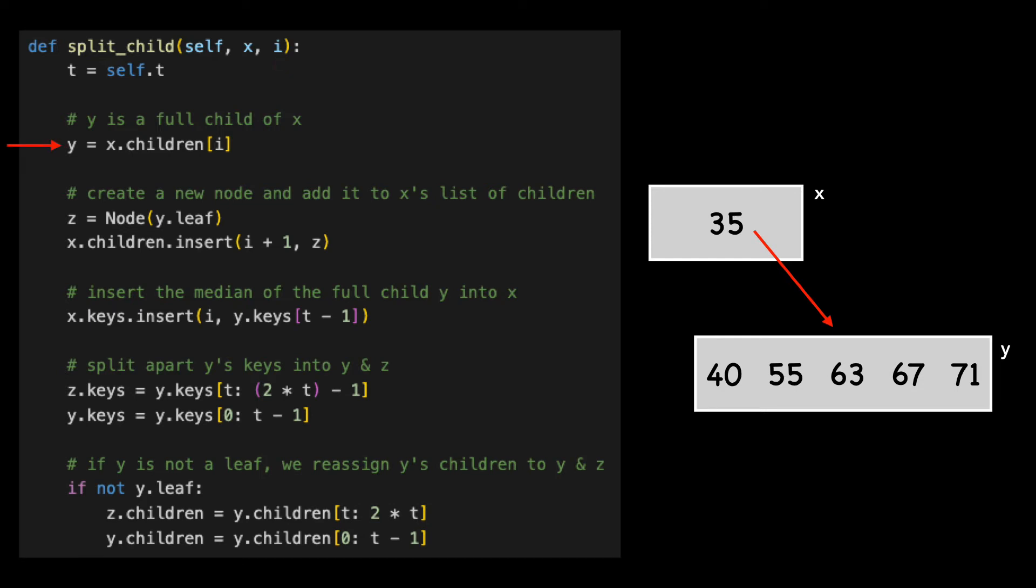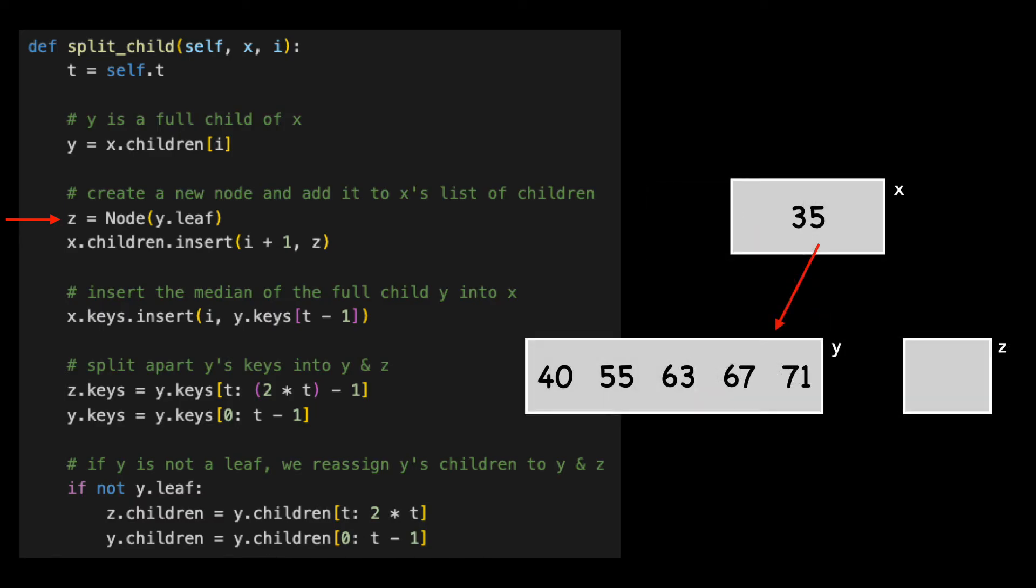We first get a pointer to the full child we're going to split, which will be Y. We create a new node called Z and add Z to X's list of children. We then insert the median key of Y into X. This is the key with a value of 63.